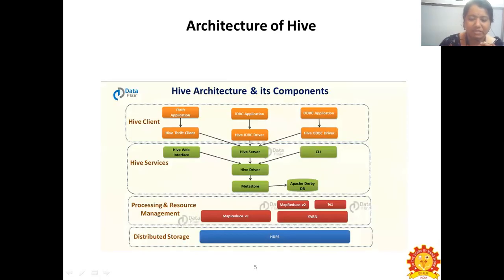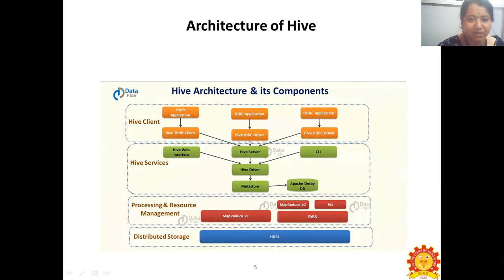This is the architecture of Hive. The Hive architecture mainly consists of four components. They are: Hive Clients, Hive Services, Processing and Resource Management, and Distributed Storage.